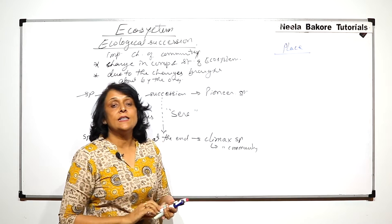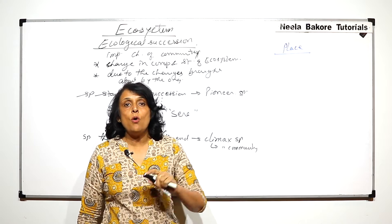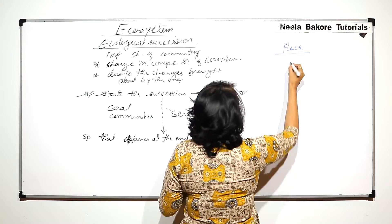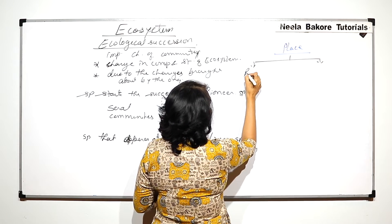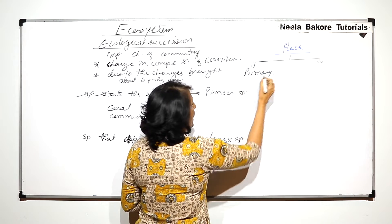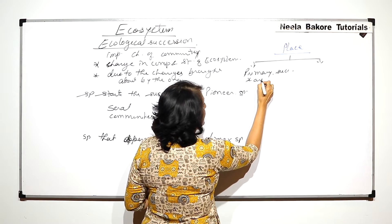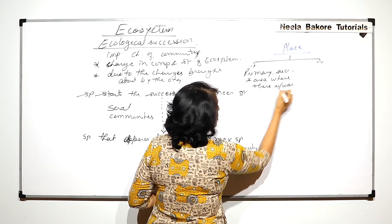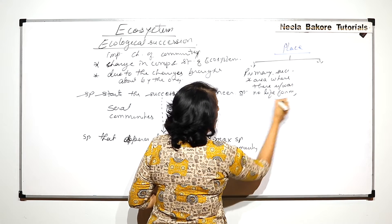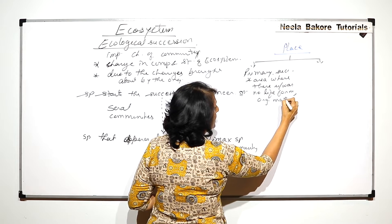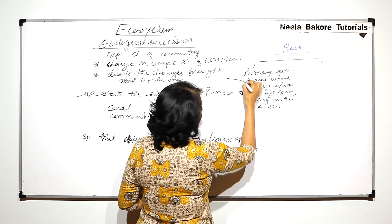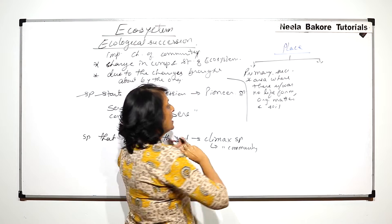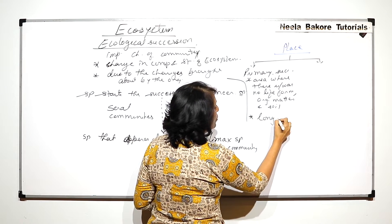If succession starts in an area where there was no life form, no organic matter, and no soil, then that is called primary succession. Primary succession occurs in an area where there is or was no life form, organic matter, or soil, and it is going to take a long time.